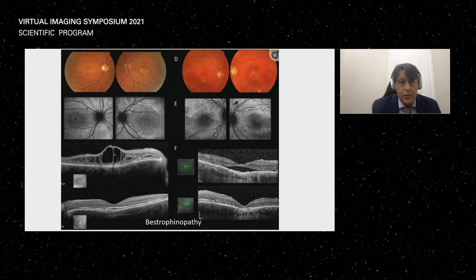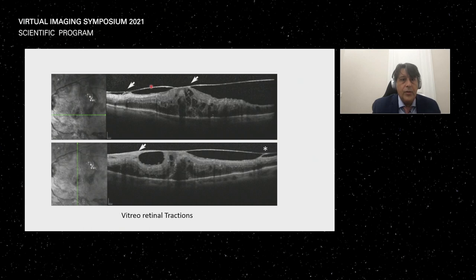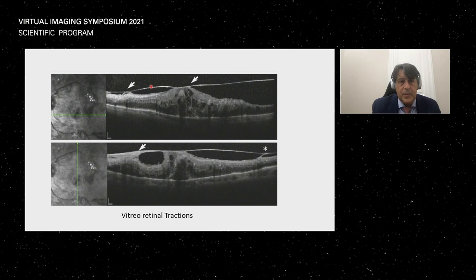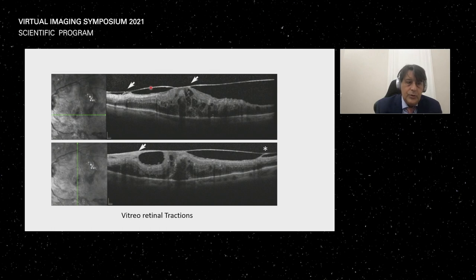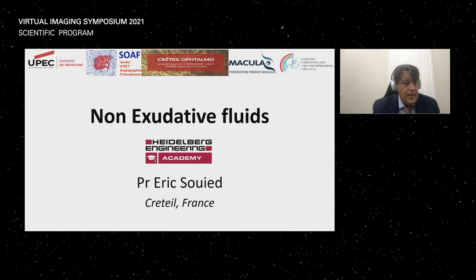Also, Bestrophinopathy with a lot of hyporeflective lesions. And of course, vitreoretinal traction — with or without any exudative condition in diabetic maculopathy or others — where only the vitreoretinal traction can lead to empty hyporeflective spaces. I hope it was helpful to differentiate exudative from transudative lesions, because in some cases it will help not to treat the patient unnecessarily.